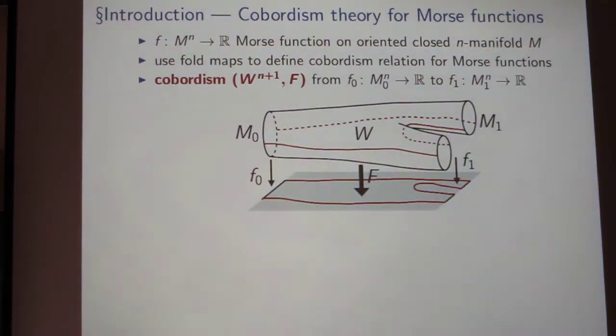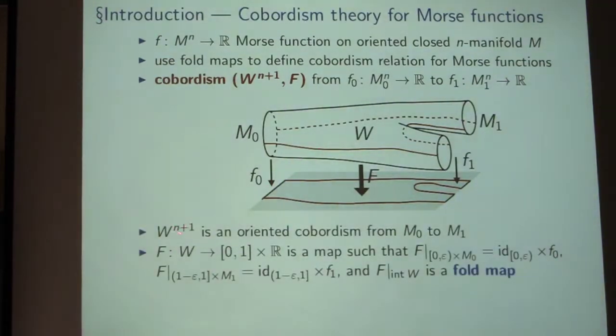So given two Morse functions f0 and f1 on such manifolds m0 and m1, our purpose is to define a notion of cobordism. And the cobordism from f0 to f1 will be a pair (W,F) as follows. So W is supposed to be an oriented cobordism from m0 to m1. I suppose orientability here. You could also define an unoriented version, but let's stay with the oriented manifolds for simplicity. So this is just an oriented cobordism from m0 to m1 in the sense of algebraic topology, or algebraic differential topology.